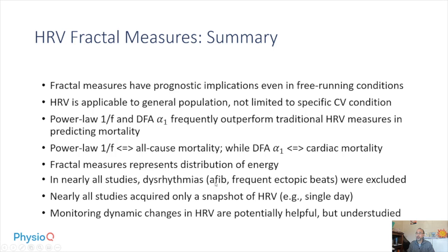In nearly all these studies, dysrhythmias — AFib and frequent ectopic beats — were excluded, just as in the epidemiological studies. So expect to exclude a number of individuals if implementing fractal measures. However, it is worth including some of these individuals to study how AFib affects fractal measures, since fractal measures are based on the balance between order and disorder, and AFib is a disordered state.